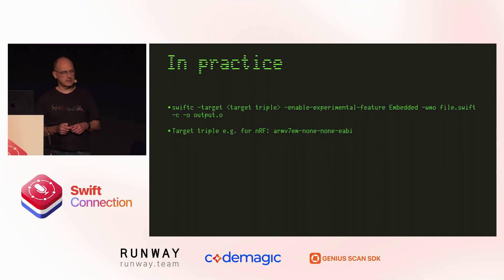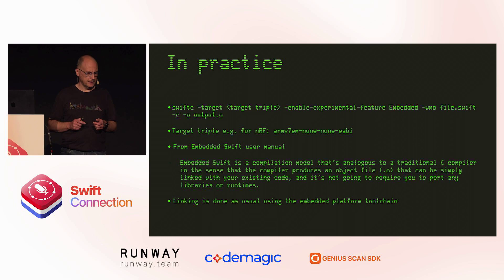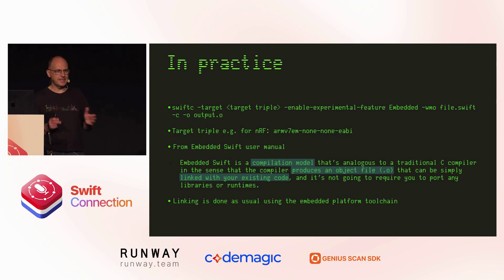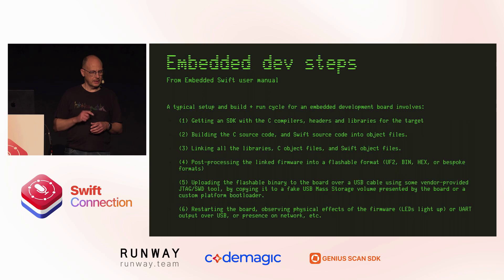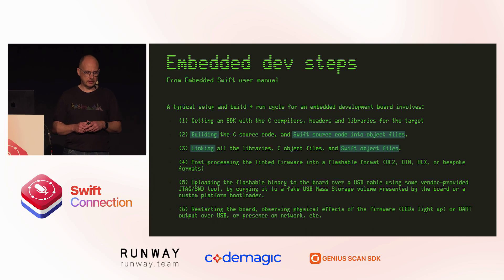In practice, it's a few compiler flags. You need to define the target for which you're compiling, enable the embedded mode — which is still experimental to this day — and do whole module optimization for dead code stripping. The embedded Swift manual says it's a compilation mode that produces an object file, much like a C compiler would, and it needs to be linked with the rest of the code. The linking is not done by the Swift compiler; it's done by the tool chain of your target environment. Swift is only a small part of all that's required.